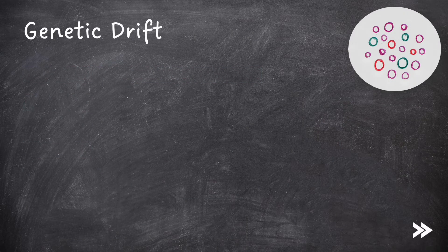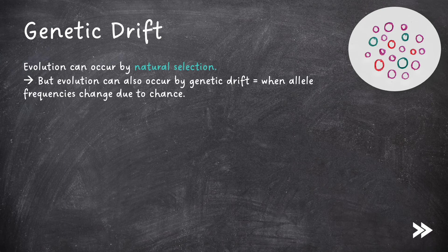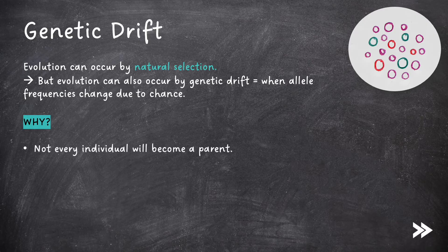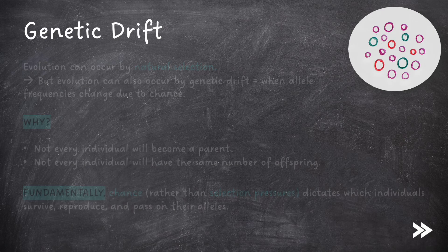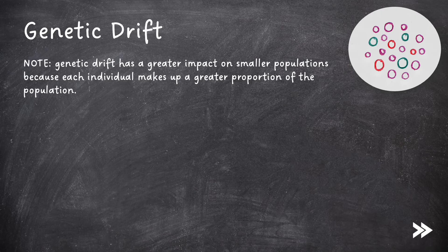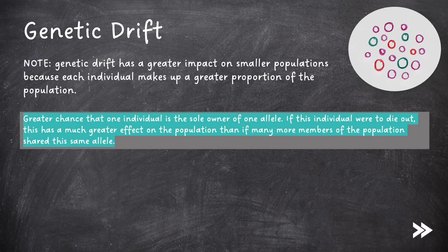Finally, we need to know about genetic drift. Evolution can occur by natural selection, but evolution can also occur by genetic drift, which is when allele frequencies change due to chance. Why could this happen? There are multiple reasons. For example, not every individual will become a parent, and not every individual will have the same number of offspring. Fundamentally, chance rather than selection pressures dictates which individuals survive, reproduce, and pass on their alleles. Note that genetic drift has a greater impact on smaller populations, because each individual makes up a greater proportion of the population. In a smaller population, there is a greater chance that one individual is the sole owner of one allele. If this individual were to die out, this has a much greater impact on the population than if many more members of the population share the same allele.